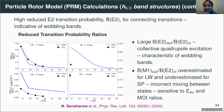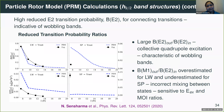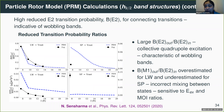A question from the chat asked whether all examples of wobbling nuclei have an odd proton rather than an odd neutron, and if there is a physical reason. The presenter clarified that 105 palladium — the first observation in the mass-100 region — is based on an odd neutron configuration. Most observed wobblers happen to be based on odd proton configurations, but there is no fundamental physics reason; it appears to be coincidence.